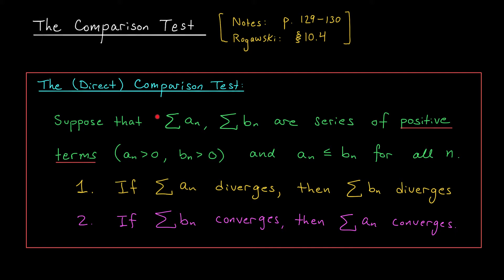You have two series: the sum of aₙ's and the sum of bₙ's. Both series have to have positive terms — all the aₙ's are positive, all the bₙ's are positive. Moreover, we're going to assume that the aₙ's are smaller than the bₙ's, so every term of the first series is less than or equal to the corresponding term in the second series. If the small series, the sum of the aₙ's, diverges, then the big series, the sum of the bₙ's, must also diverge.